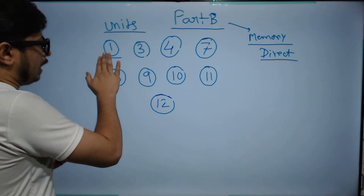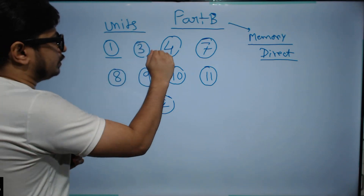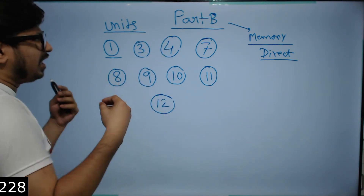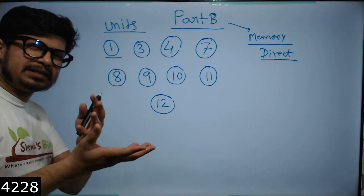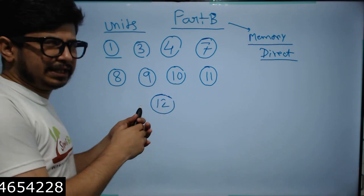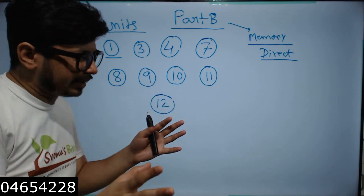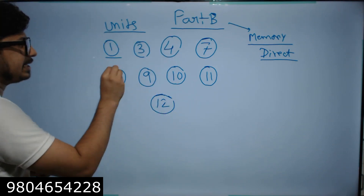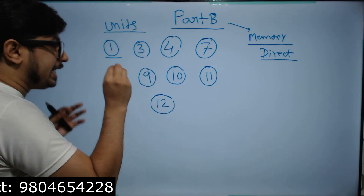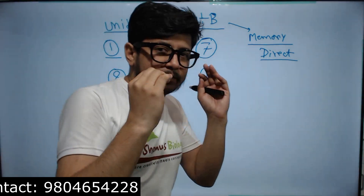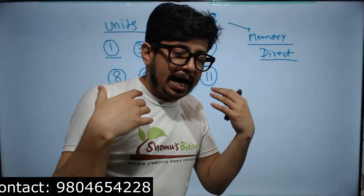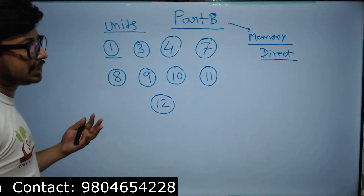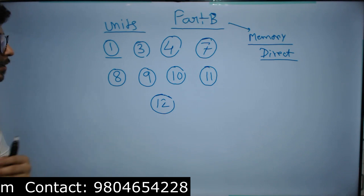To clarify, the important units are: 1, 3, 4, 7, 8, 9, 10, 11, and 12. Unit 2 is not that important and is not included in this list.